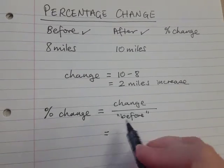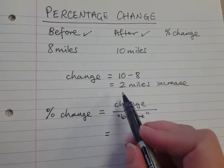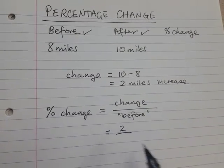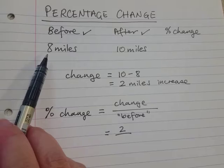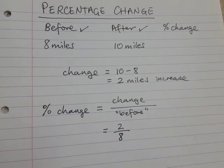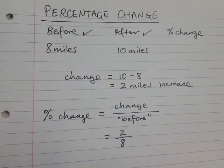So here we go. The amount it changed was 2 miles and we're going to divide it by the miles before the change. So 2 over 8.